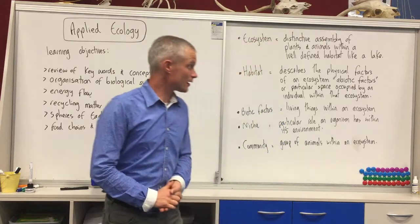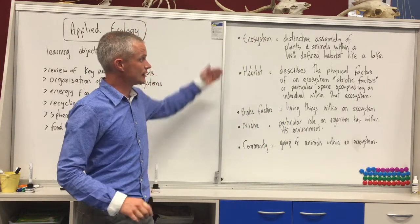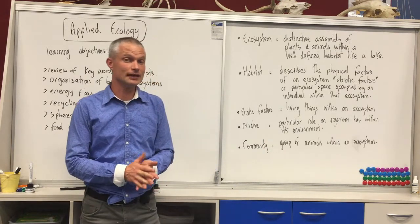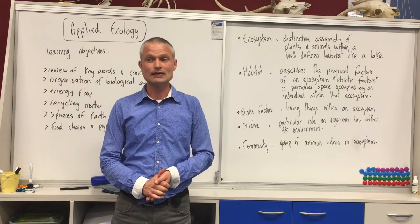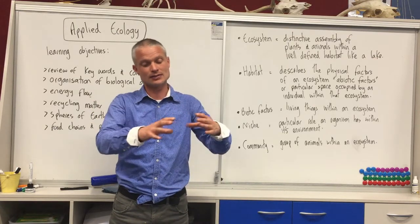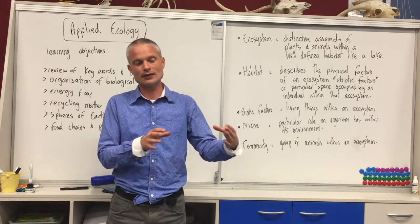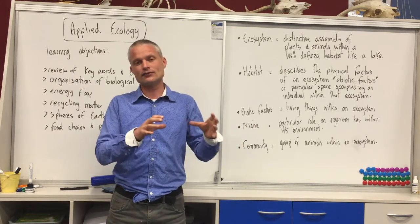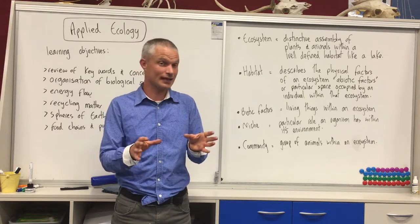So just to start with, I'll touch on some of the keywords. An ecosystem is a distinctive environment — it could be a lake, a river, a pond — and when we use the term ecosystem it's quite a defined environment that we're looking at, examining the different interactions of the biological systems and what the habitat is like.